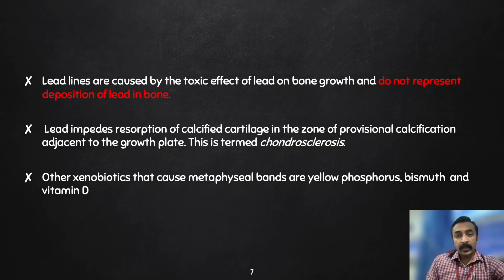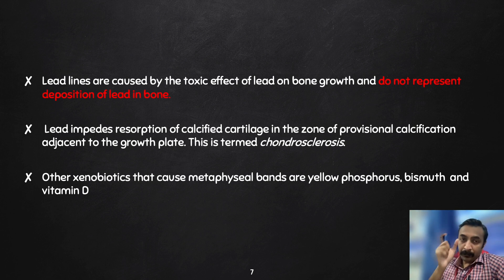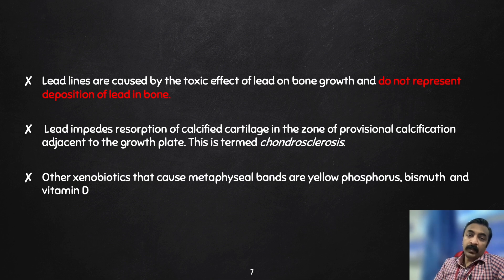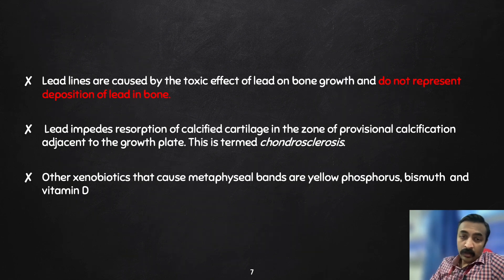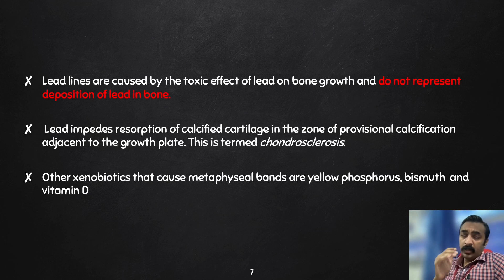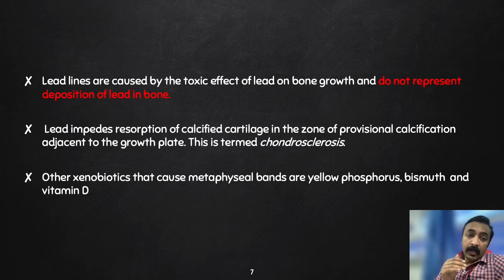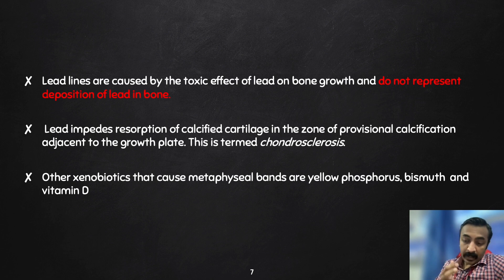A key thing to remember is that lead lines do not represent deposition of lead in the bone, but rather are caused by the toxic effect of lead on bone growth. Lead impedes the resorption of calcified cartilage in the zone of provisional calcification adjacent to the growth plate — this is termed osteosclerosis. Also important: this finding is not always pathognomonic of lead toxicity. Other xenobiotics that can cause metaphyseal bands include organophosphorus compounds, bismuth, and vitamin D.